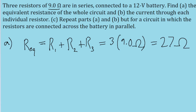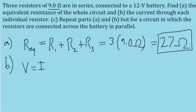That's the answer to part A — that is the equivalent resistance through the circuit. Part B asks us to find the current through each individual resistor. This can simply be done using Ohm's law, which tells us that the voltage, or potential difference, is equal to the current times the resistance. So solving for current, the current is equal to the potential difference divided by the resistance.